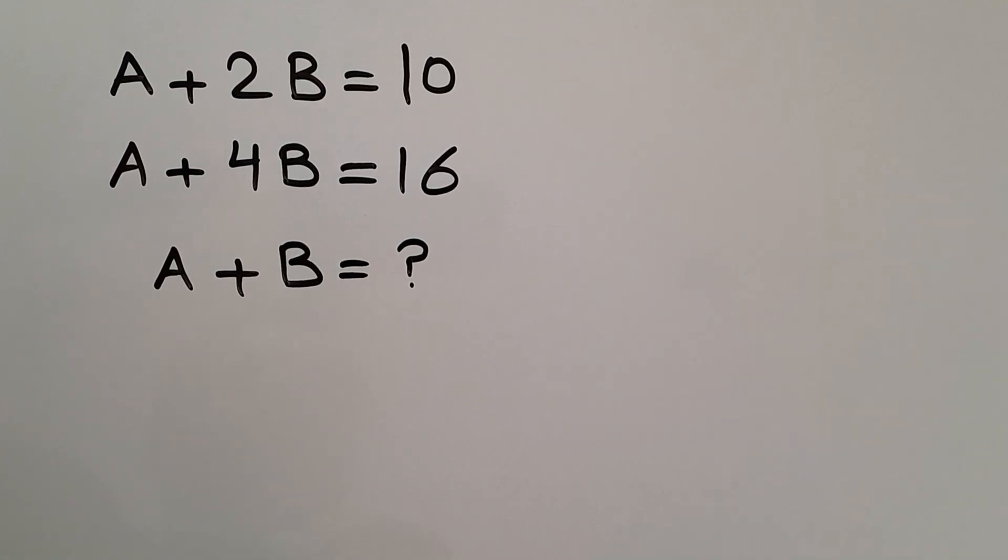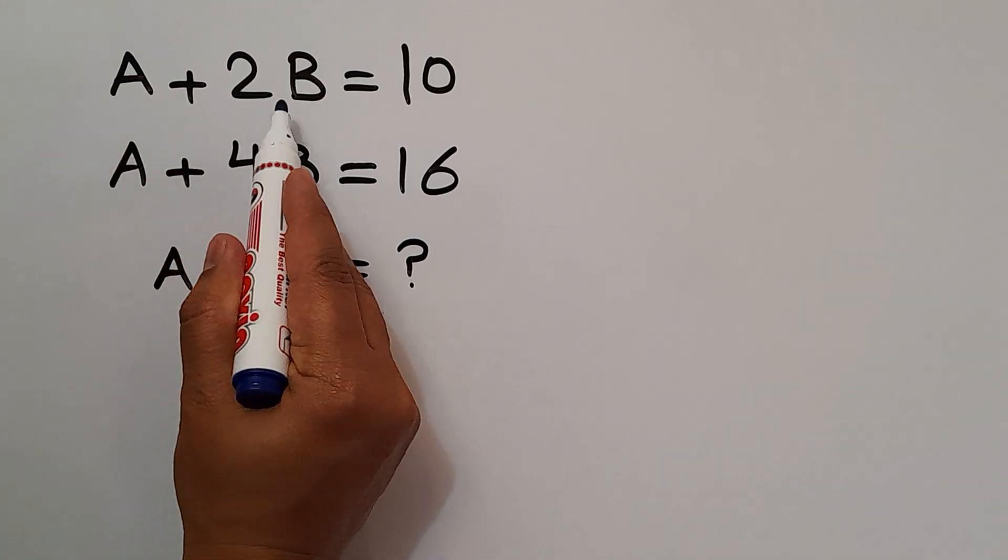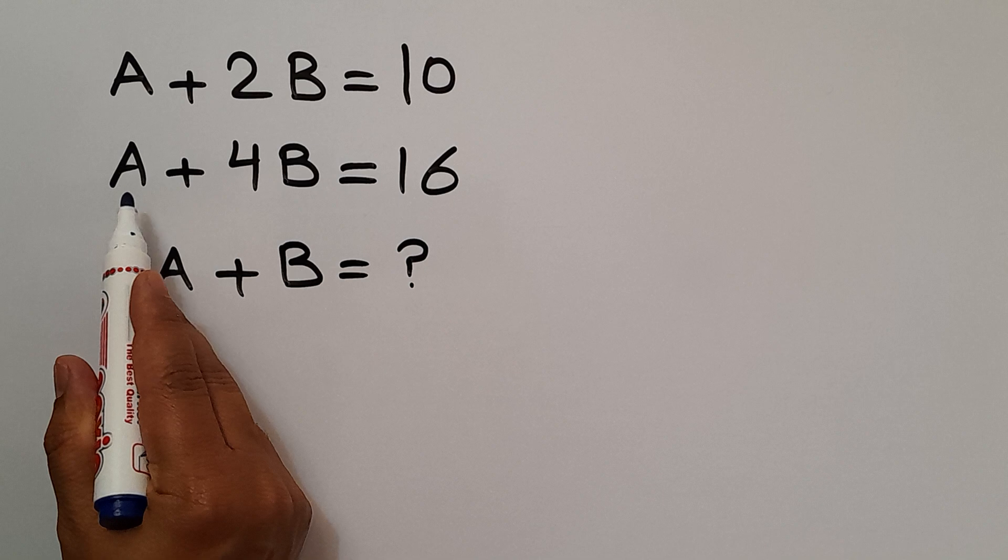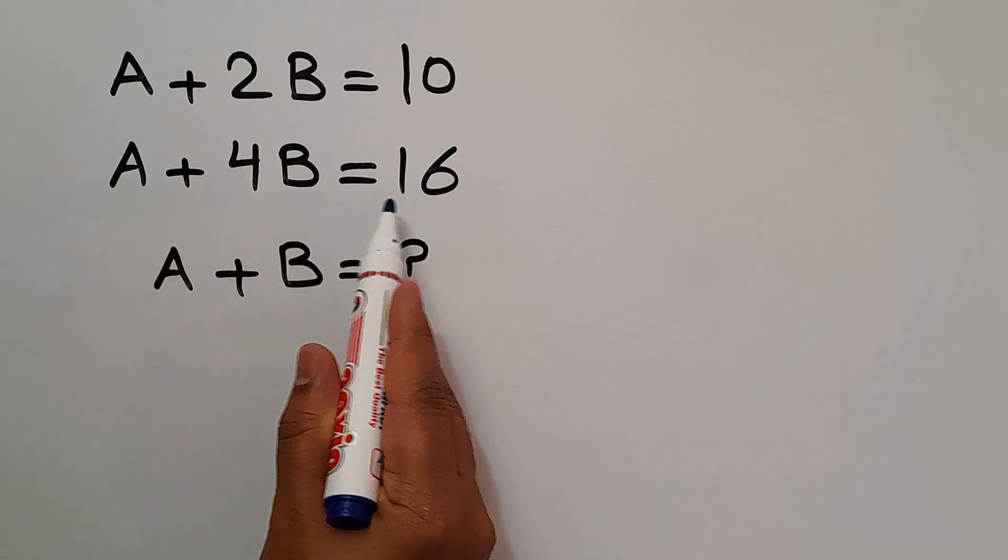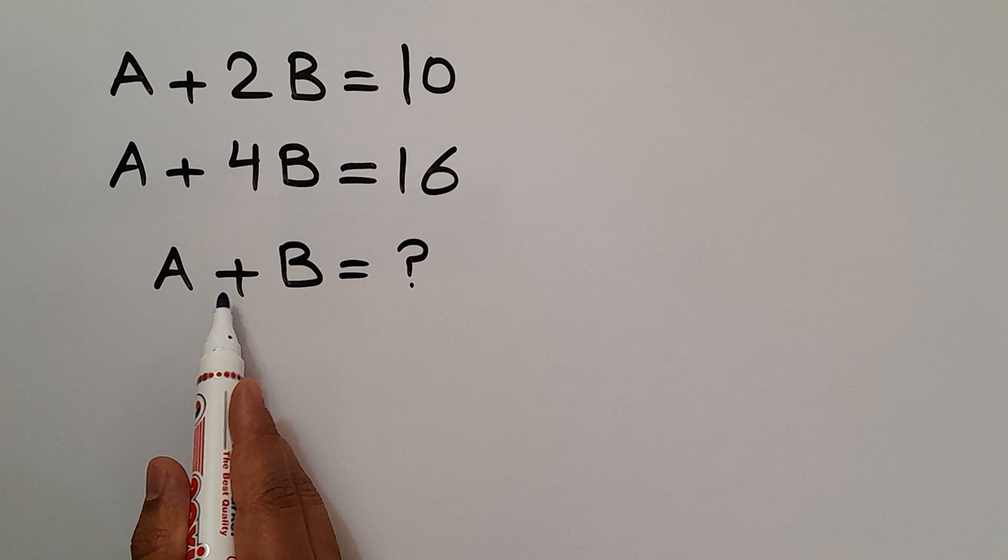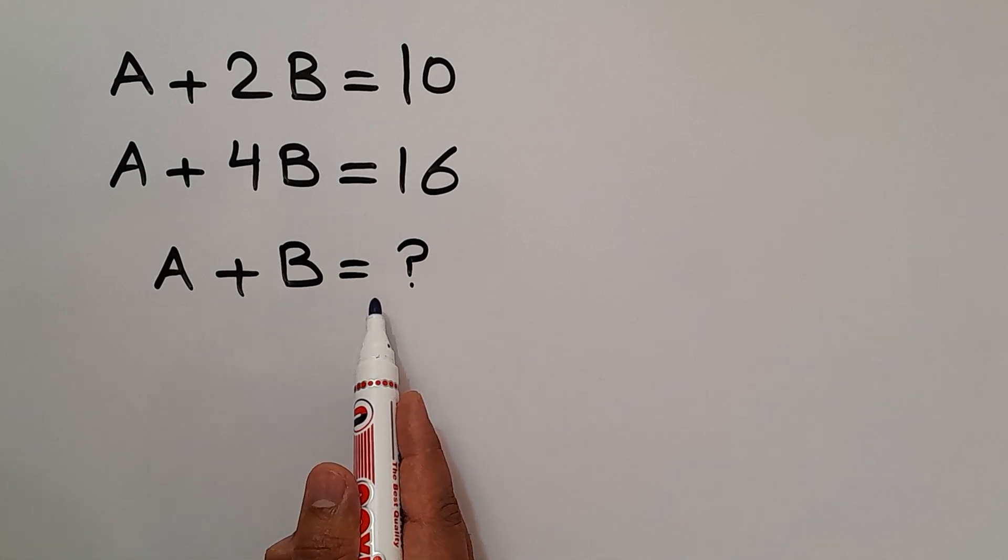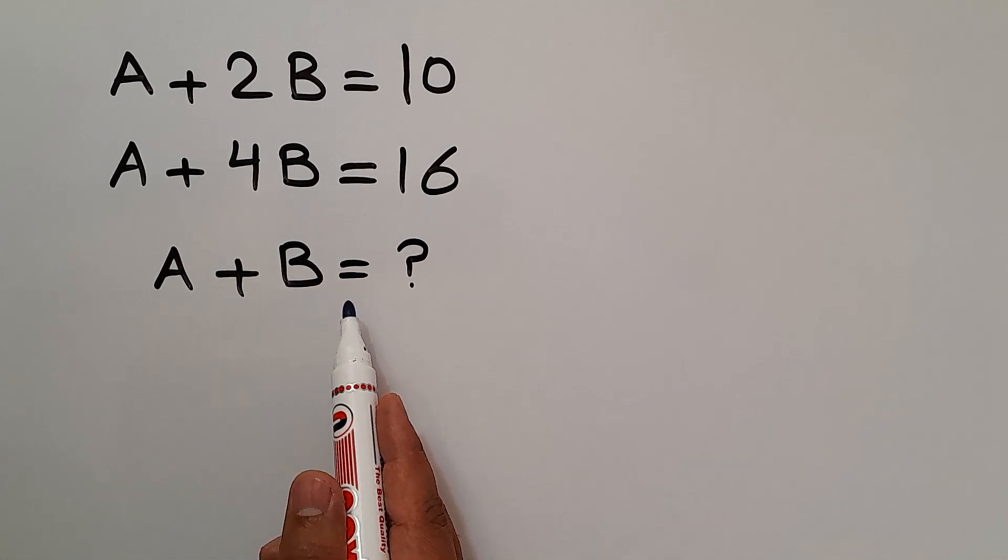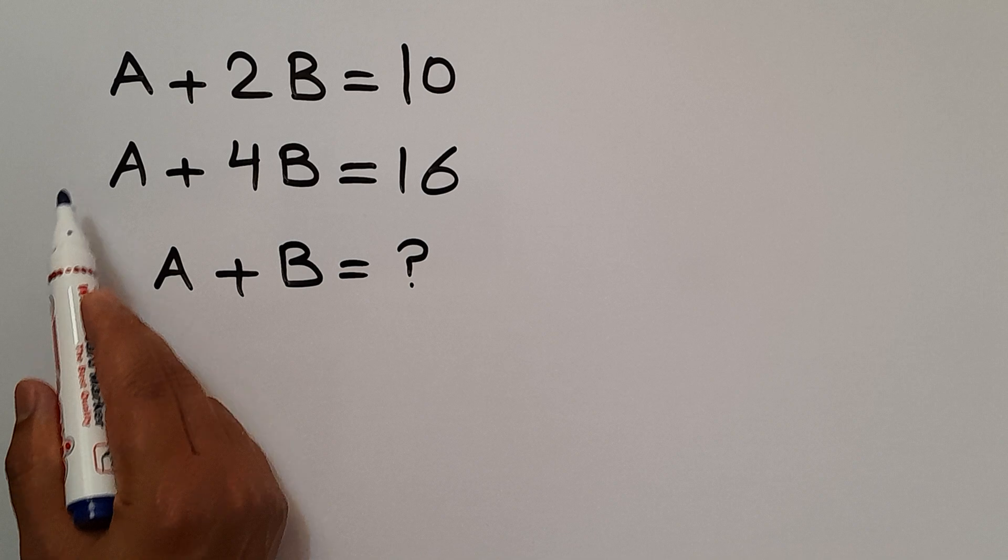Hey guys, welcome to Puzzle Joy. A plus 2B equals 10. A plus 4B equals 16. Our goal is to find the value of A plus B. Are you ready to solve? Let's go down to start. Let's subtract the first equation from the second equation.